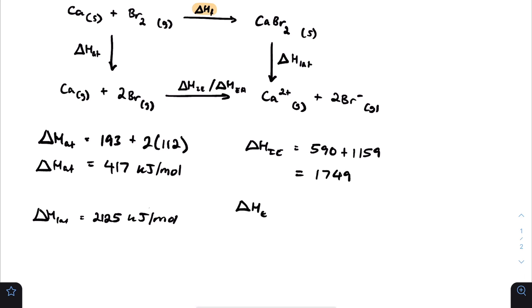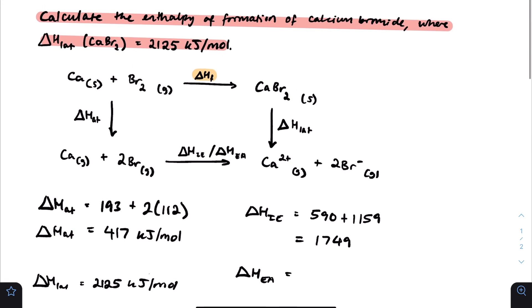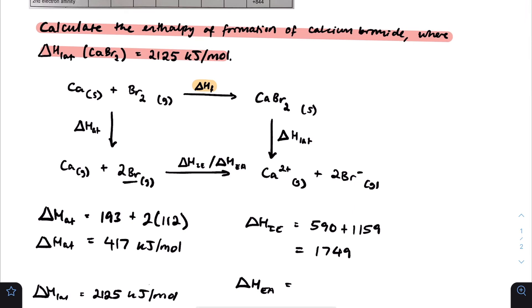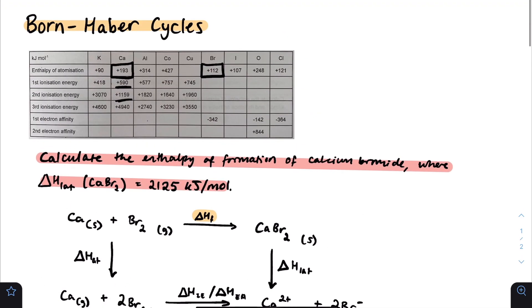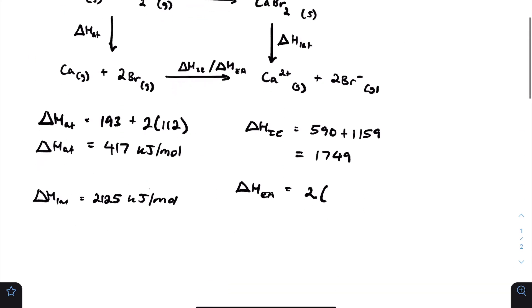Now let's consider H_EA, the electron affinity. This is for forming anions because you're adding electrons. You have 2 bromine ions being formed. Instead of adding the first and second electron affinity, since it's only going to the first electron affinity but there are 2 of them, we multiply the first electron affinity of bromine by 2. This is different from calcium, which is one atom losing two electrons. In this case, two atoms each gaining one electron. Bromine's first electron affinity is negative 342. This becomes 2 times negative 342, which equals negative 684 kJ per mole.